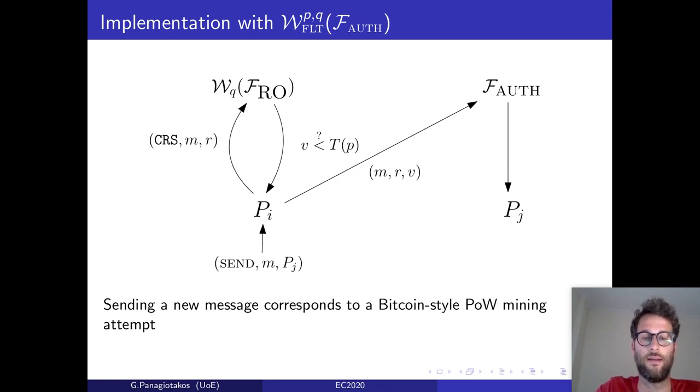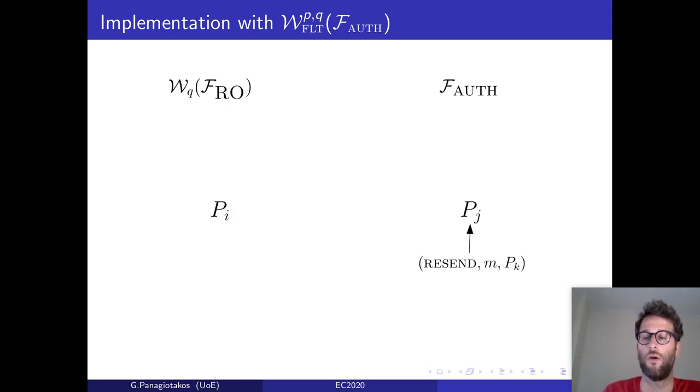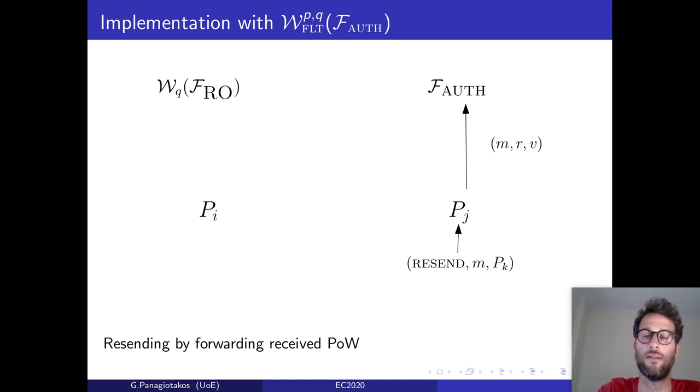Now, the fact that parties have a limited number of queries per round budget to the random oracle, implies that the number of new messages they can send is bounded, as the filtered network functionality dictates. In order to re-send the message now, they just have to forward these three values, the message, the nonce, and the hash. And obviously, this forwarding is free in this implementation.